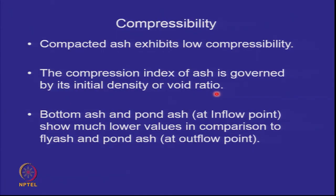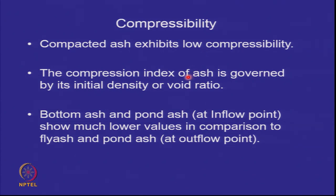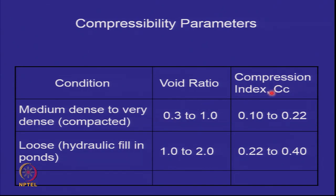Compacted ash exhibits low compressibility. The compression index C_c is governed by initial density and void ratio. Bottom ash and pond ash show lower C_c values than fly ash. For loosely deposited or hydraulically deposited ash, C_c varies from 0.22 to 0.40; for medium to dense compacted ash, C_c varies from 0.1 to 0.22. This is the normal range associated with silts, sandy silts, or silty sands — so ash behaves like soil.